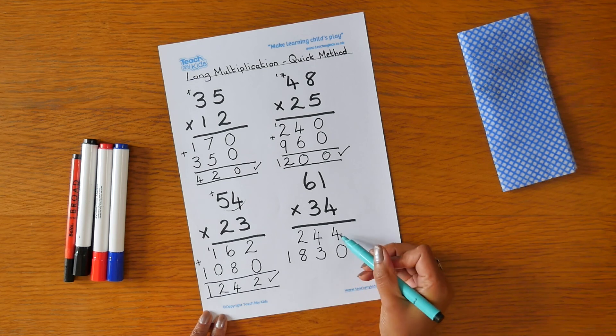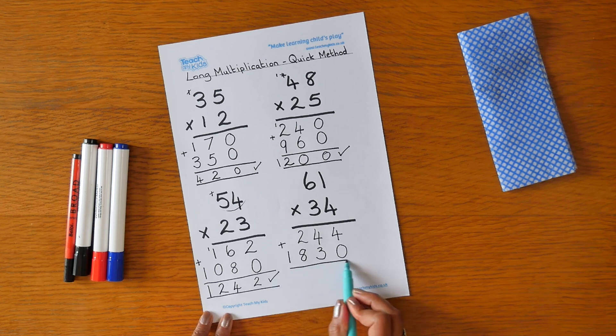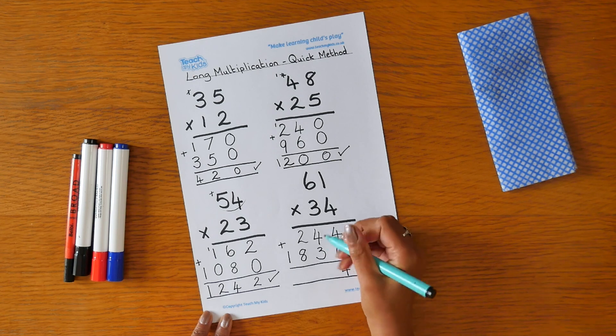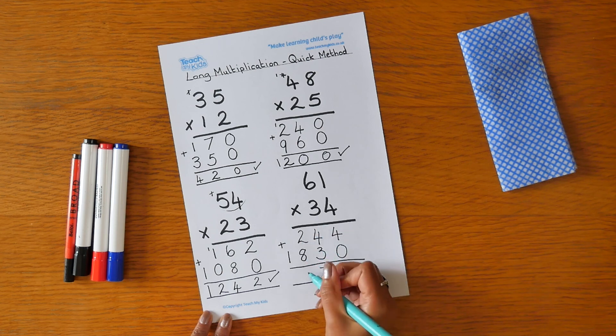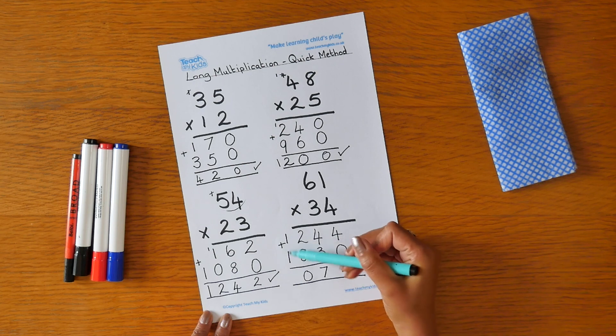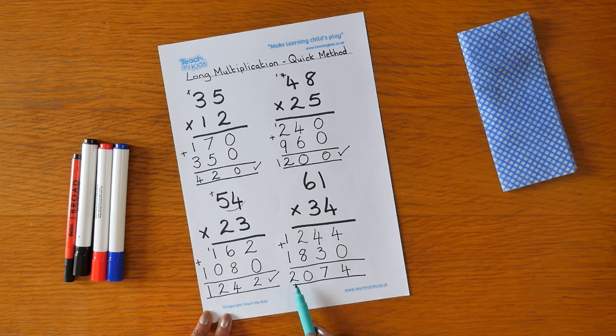We can now add our 2 numbers to find our final answer. 4 add 0 is 4. 4 add 3 is 7. 2 add 8 is 10. We need to carry the 1. You can place it underneath if you want to. So 1 add 1 is 2. So our answer is 2,074.